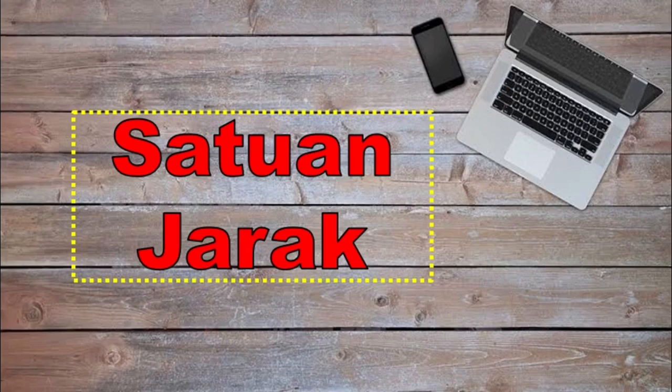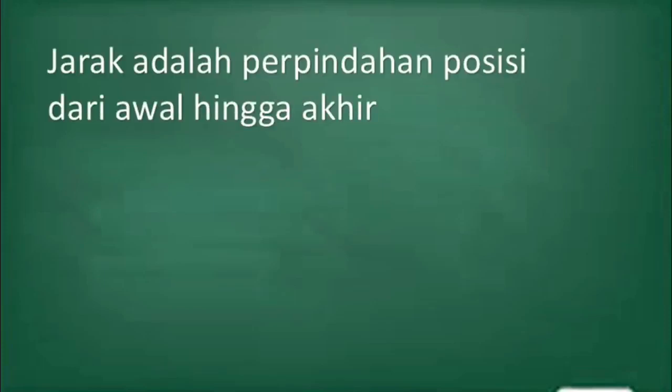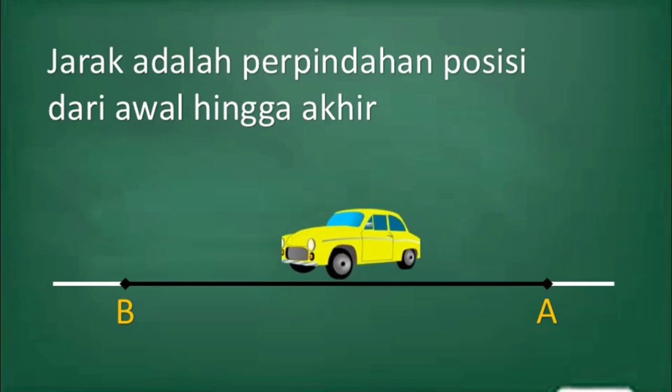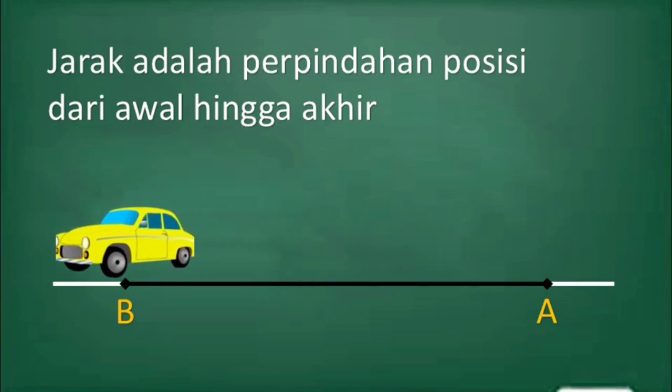Satuan Jarak. Di kelas sebelumnya kita sudah mempelajari satuan jarak. Ada yang masih ingat jarak itu apa? Jarak adalah perpindahan posisi dari awal hingga akhir. Contohnya adalah pada gambar berikut: sebuah mobil bergerak dari titik A dan berakhir di titik B. Maka yang dinamakan jarak adalah garis A ke B.